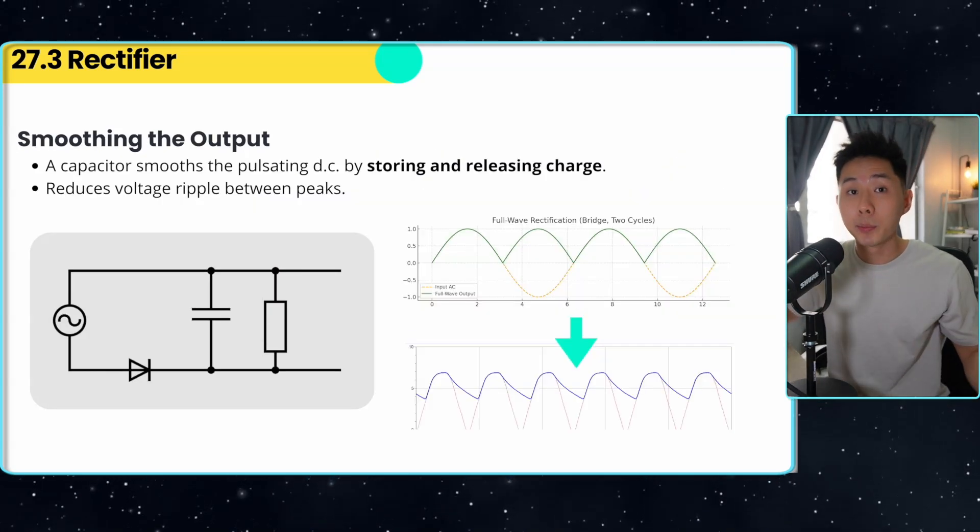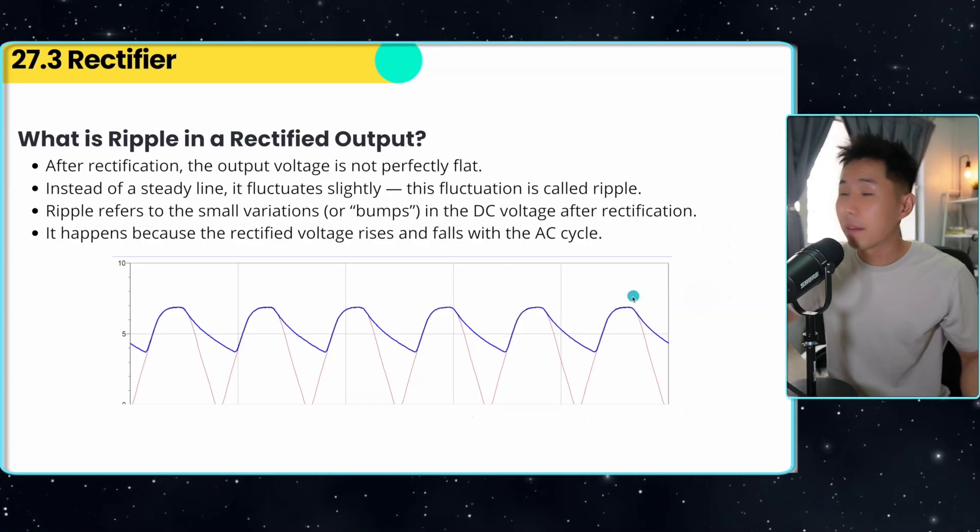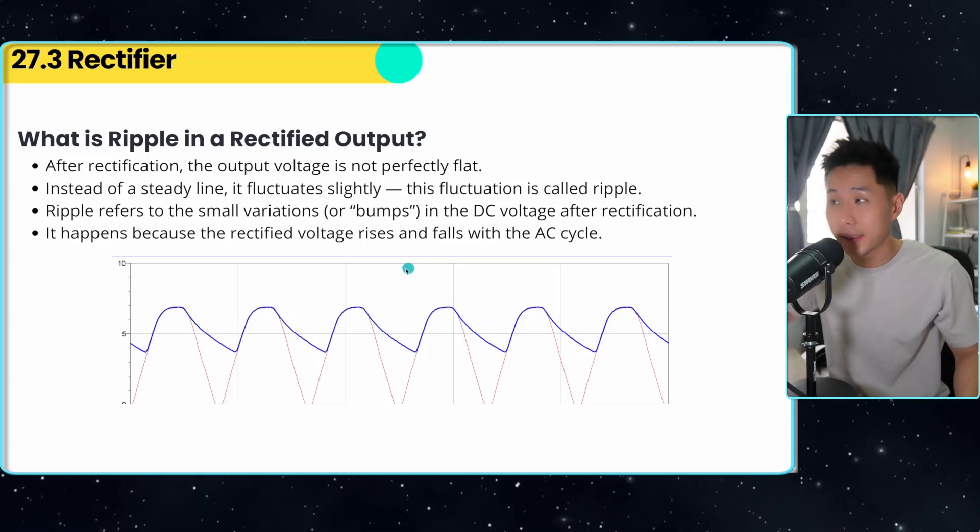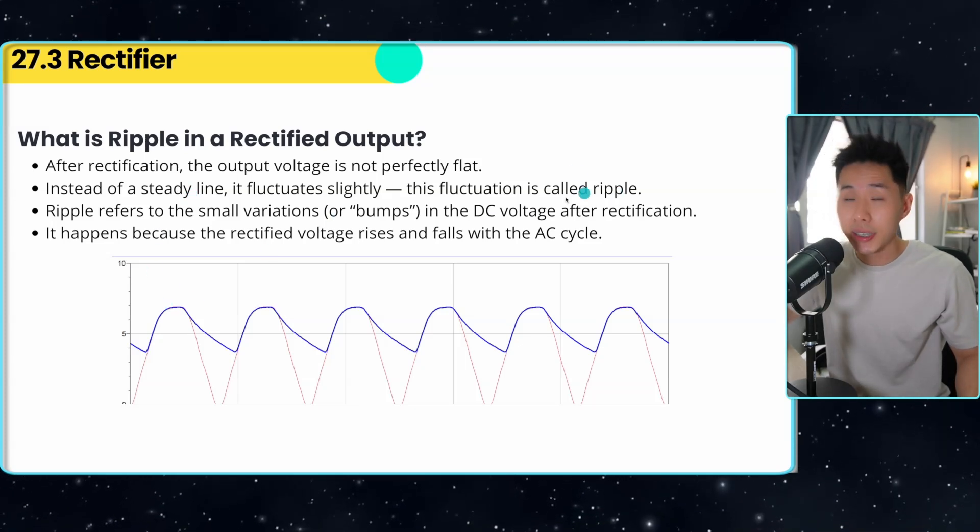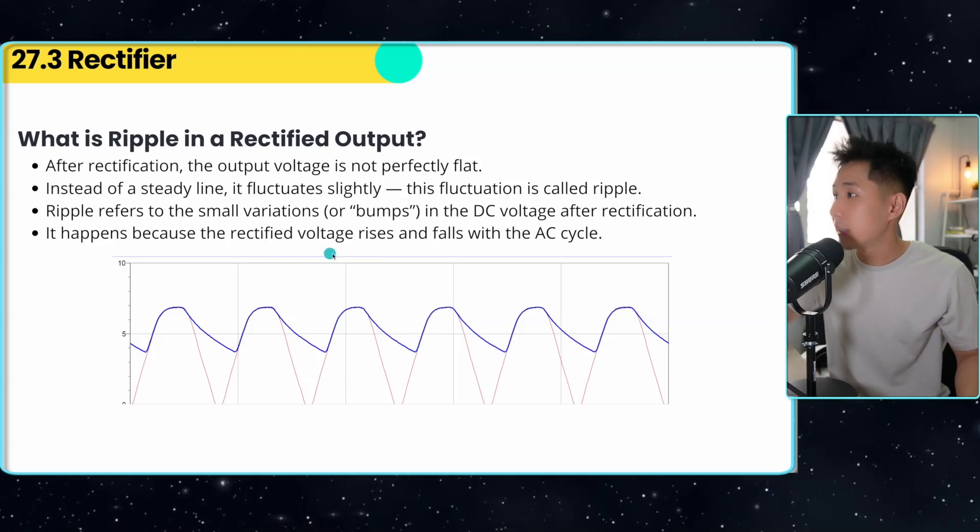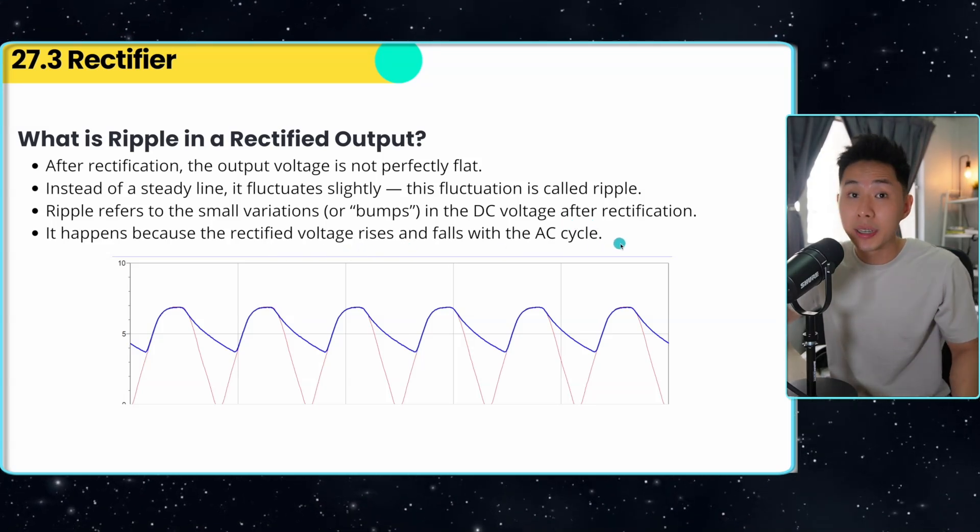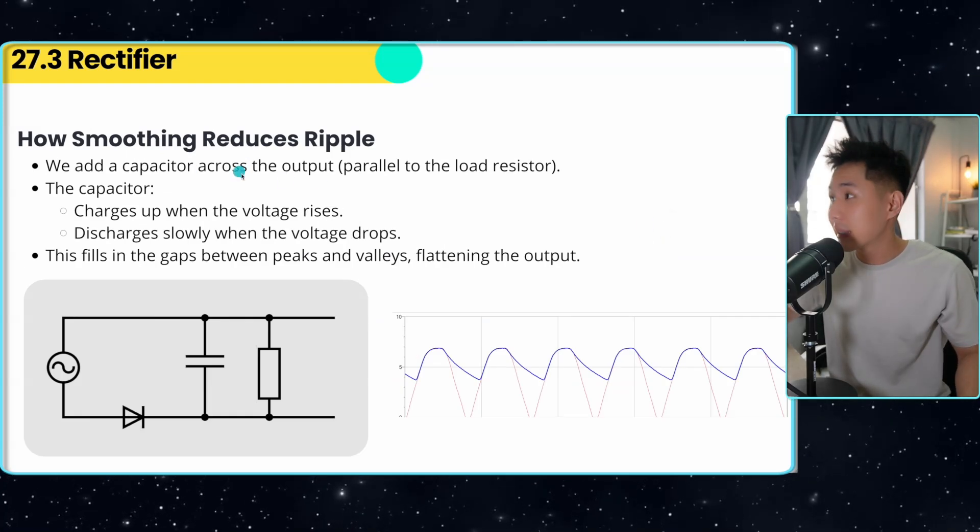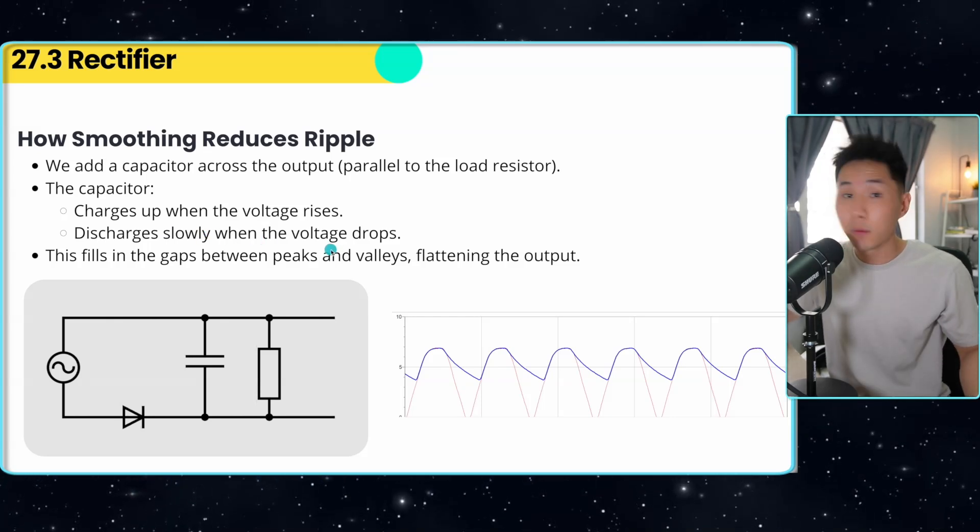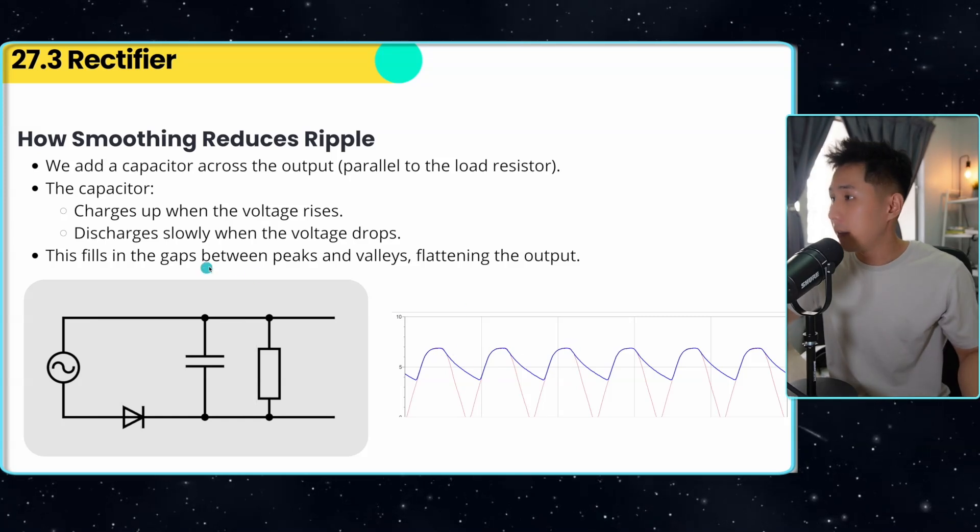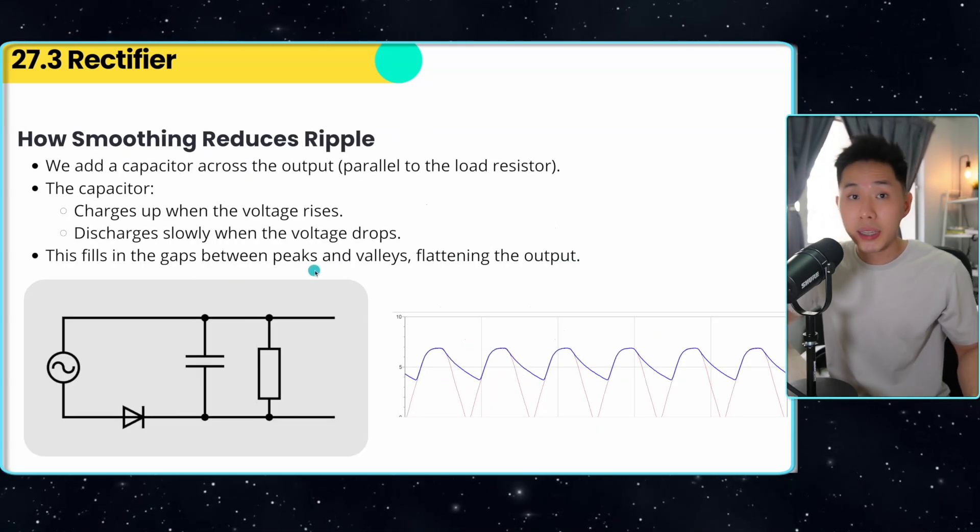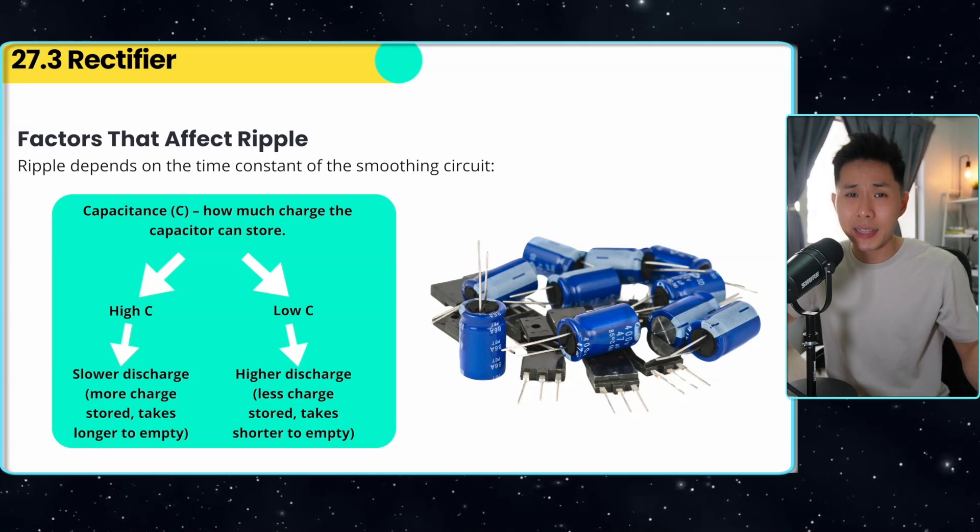Next up, we'll talk about how to smooth out the output. Before that, you have to understand the concept of ripple. After rectification, the output voltage is not perfectly flat. Instead of a steady line, they might fluctuate slightly, and these are called ripples. They are small variations in the DC voltage after rectification. It happens because the rectified voltage rises and falls within the AC cycle. And because of that, you need a capacitor across the output. So this capacitor charges up when the voltage rises, and discharges when the voltage drops, which gives you a graph like that. And it fills in the gap between the peak and the valley, flattening the output.